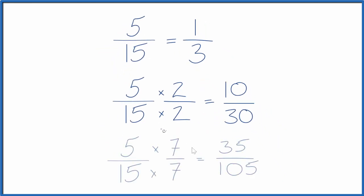One more. Here we use 7/7, which is equal to 1, and we end up with 35/105. So all of these are equivalent fractions for 5/15.